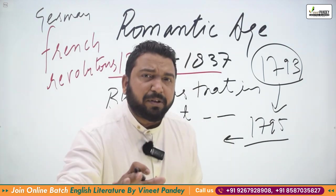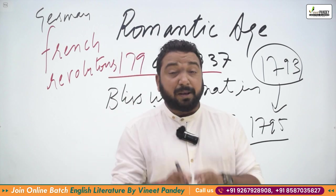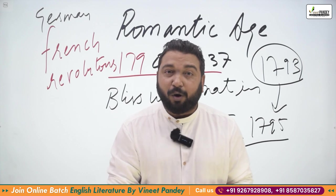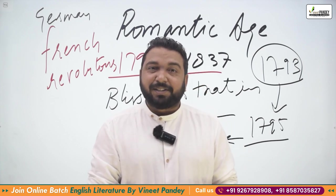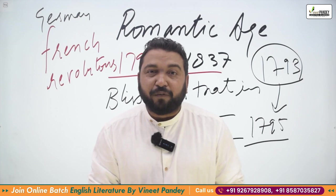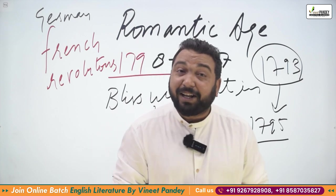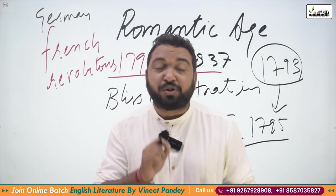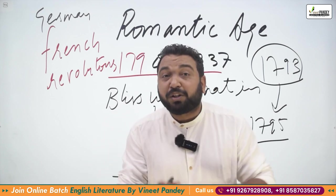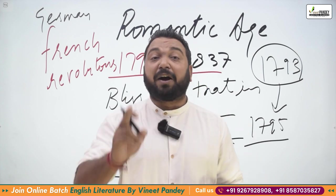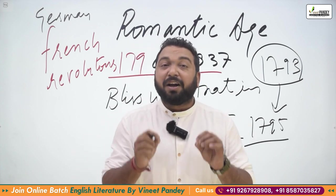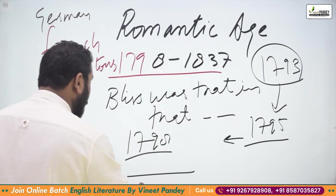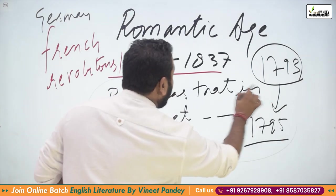By 1795, Wordsworth and Coleridge started working with ideas together and published Lyrical Ballads in 1798 — a planned, deliberate attempt. Wordsworth had actually gone to France to be part of the French Revolution, and there he met and married a lady. 99.9 percent of students don't know that Wordsworth was already married in France and had a daughter named Caroline.